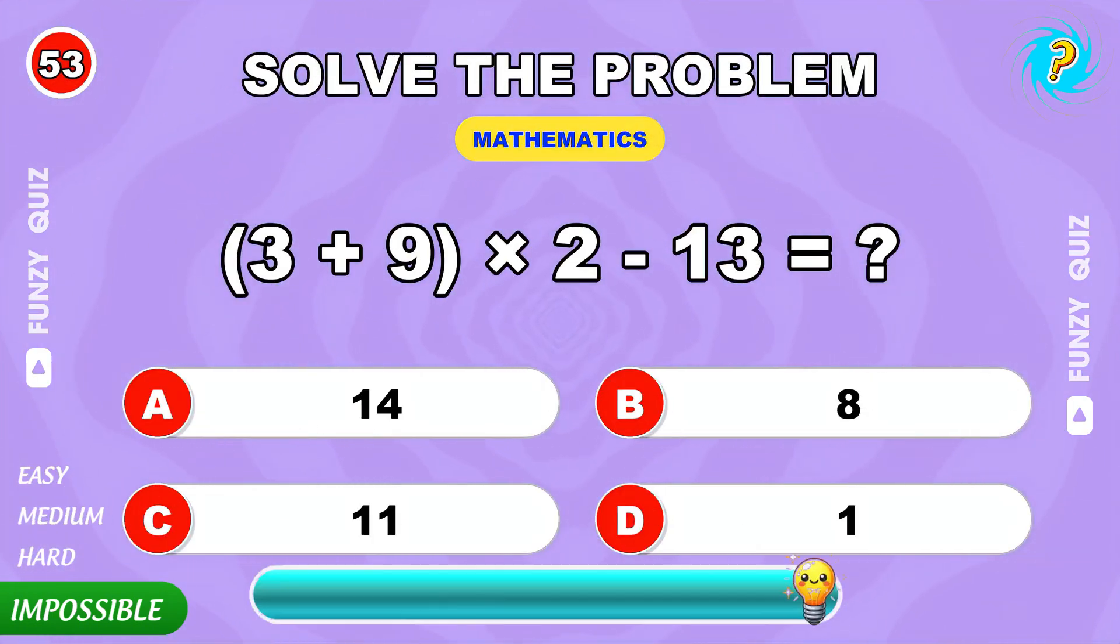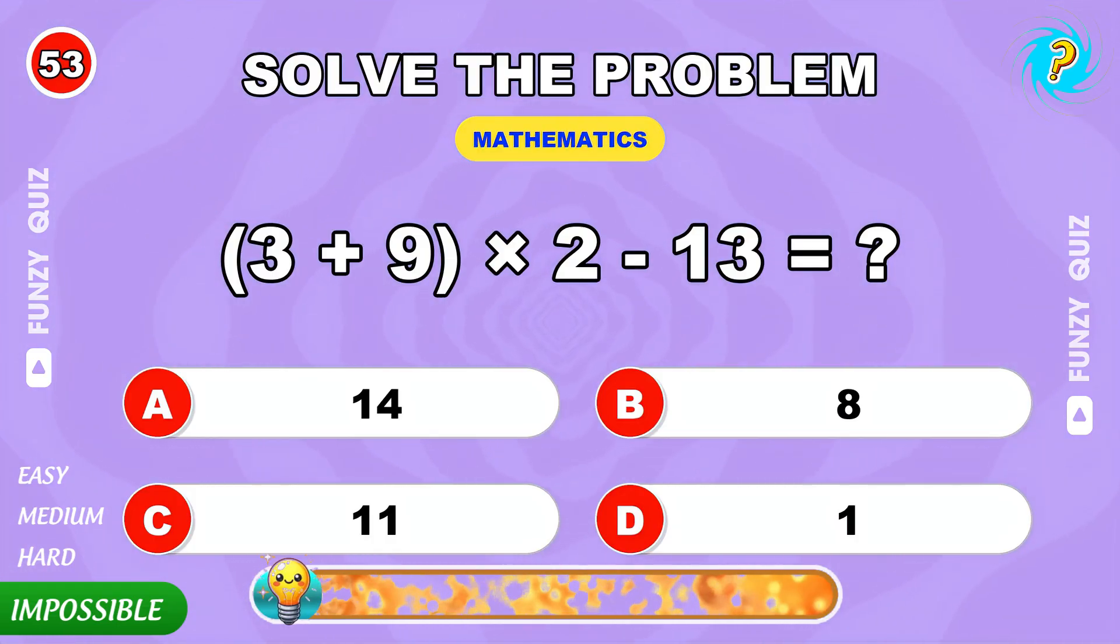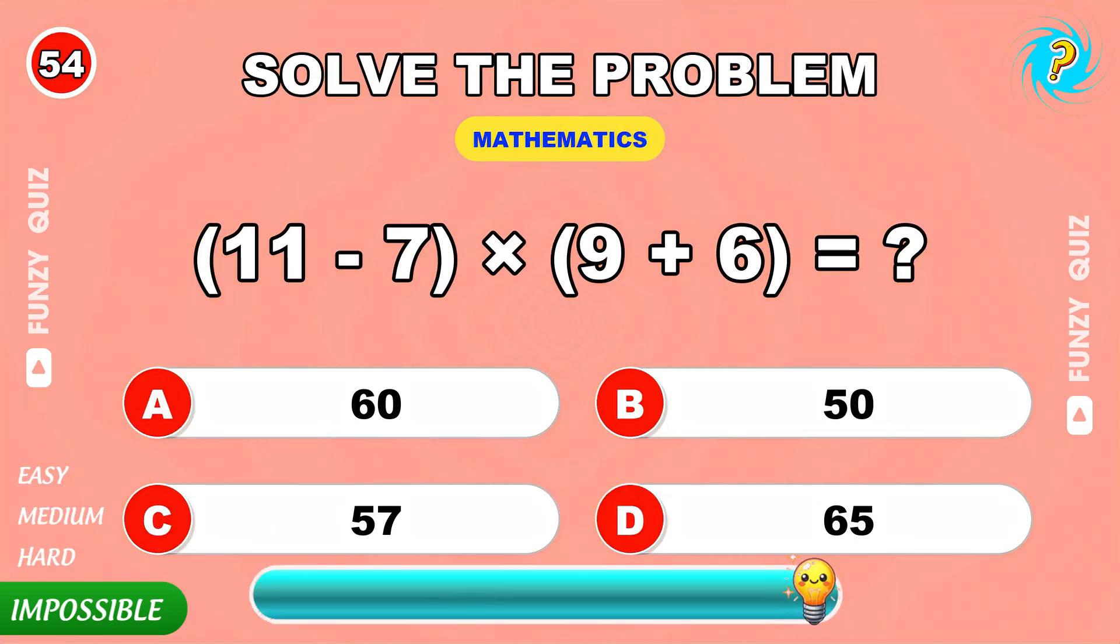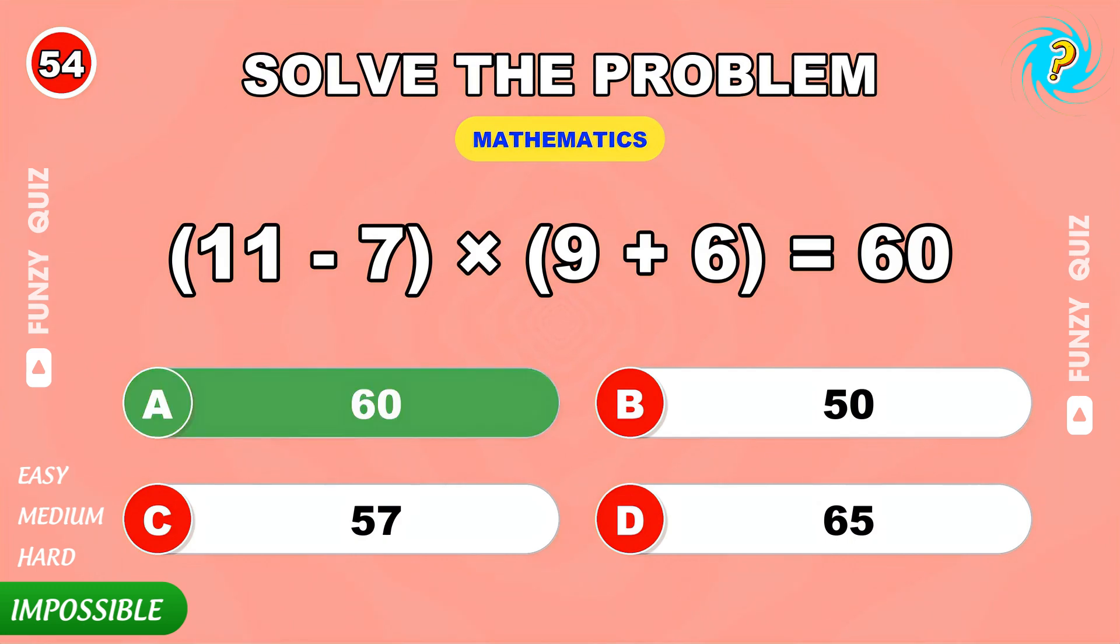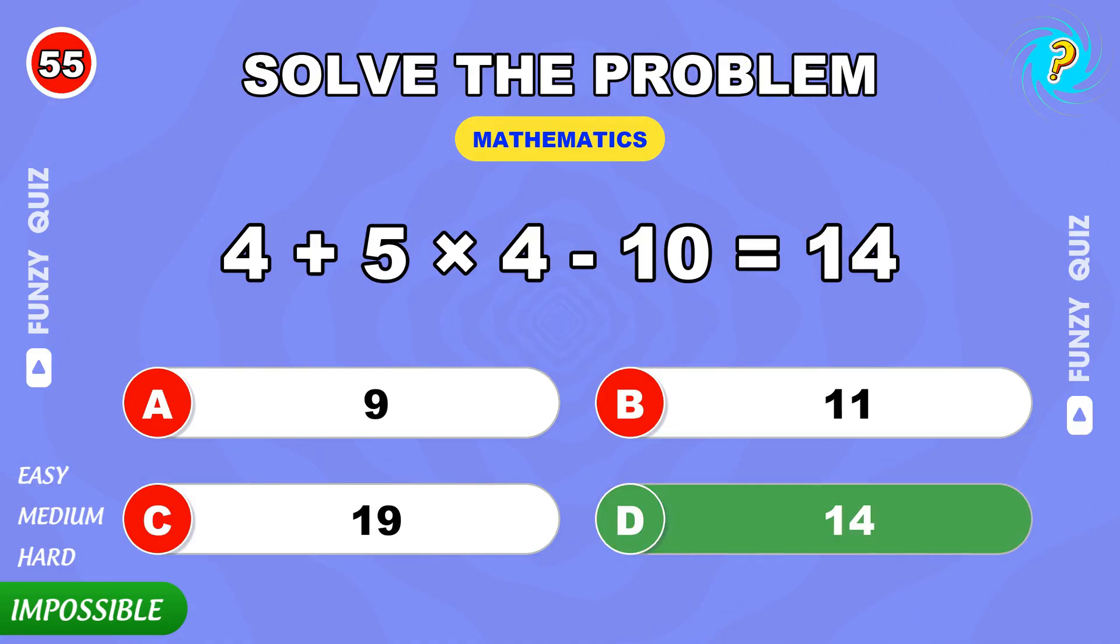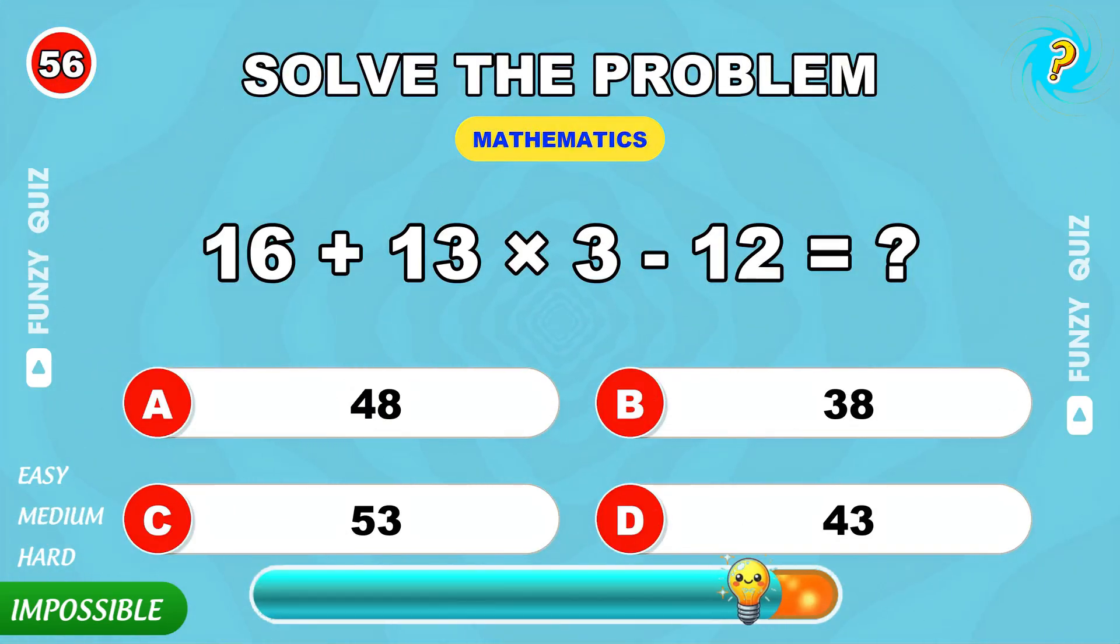3 plus 9 times 2 minus 13. 11. 11 minus 7 times 9 plus 6. 60. 4 times 5 minus 10. 14. 16 plus 13 times 3 minus 12. 43.